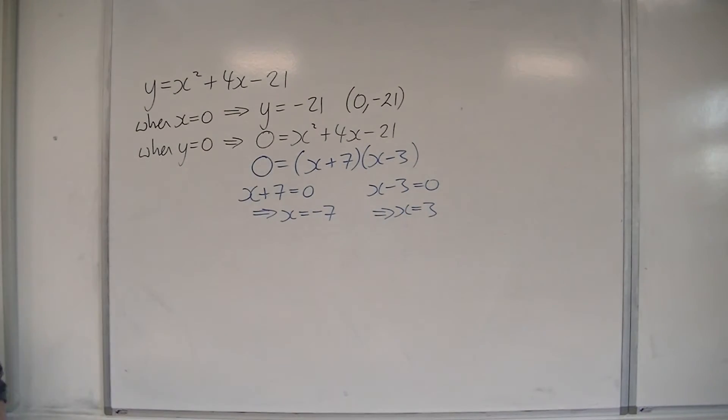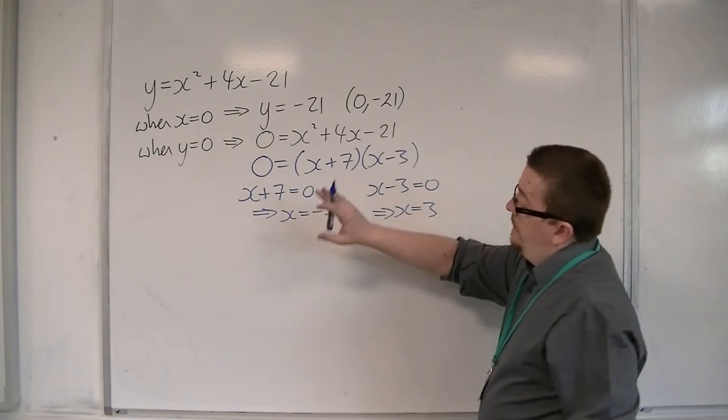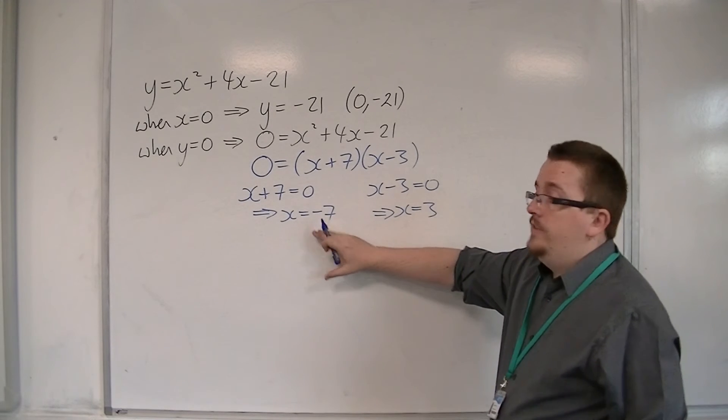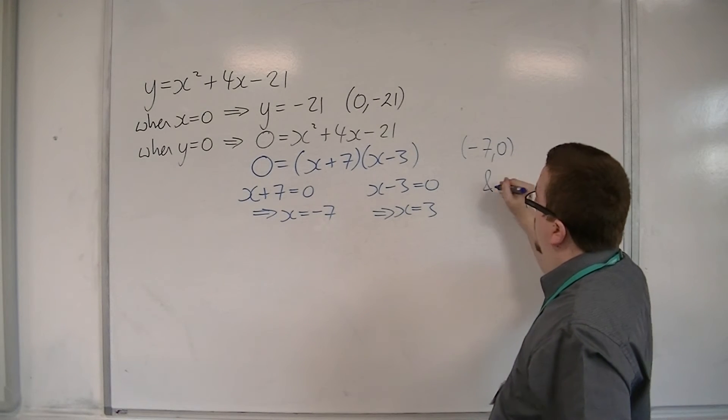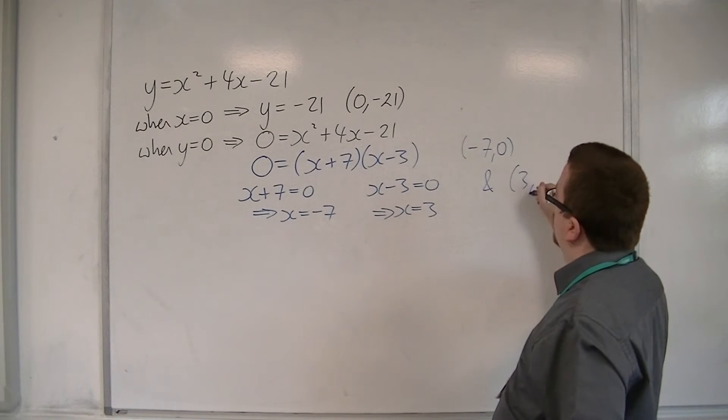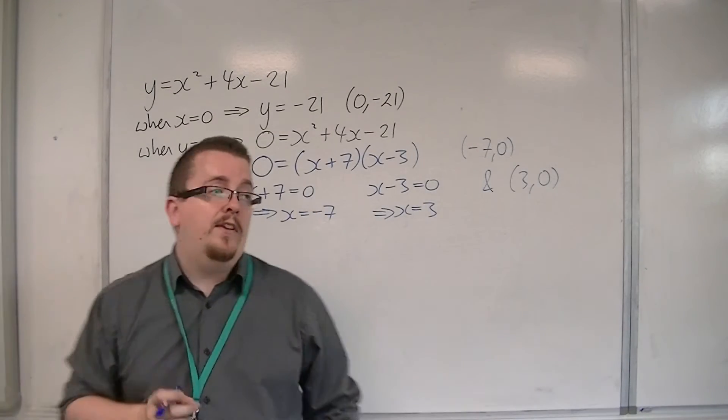And so this is telling me that I have one point minus 7, 0, that is of interest to me, and the other point is 3, 0. This is where it crosses the x-axis.